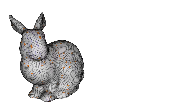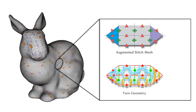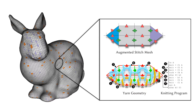The core of our interface is an augmented stitch mesh data structure, in which each face contains both yarn geometry for visualization and a low-level knitting program for fabrication.